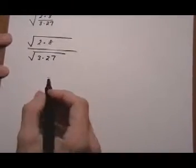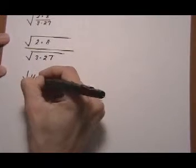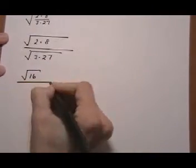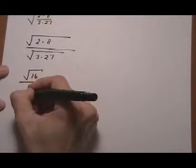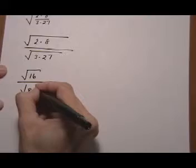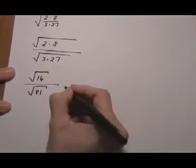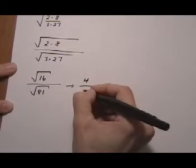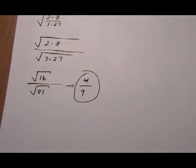And then we can go ahead and say, root 2 times 8 is the same as root 16. Well, that's nice because that's a perfect square. So we're going to be able to take that root. And then 3 times 27 is 81. Okay, that worked out nice too. So now we can do root 16 is 4, root 81 is 9. And that would be our final answer.